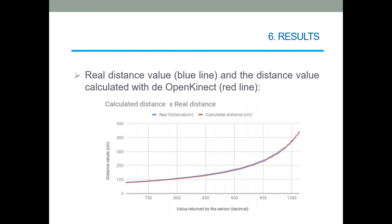In order to use the distance information, it was needed to discover how to treat the information returned from the Microsoft Kinect sensor. In the OpenKinect website was found an equation that can be used to convert the binary information into the decimal information of distance.